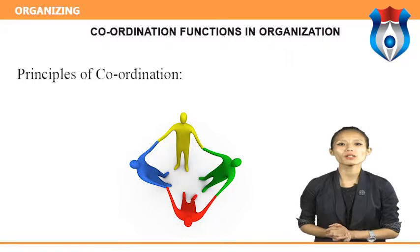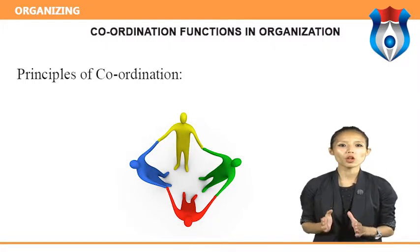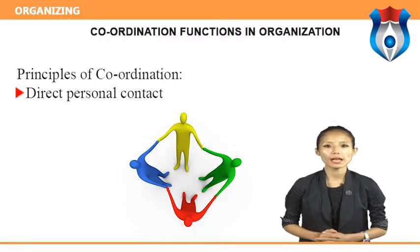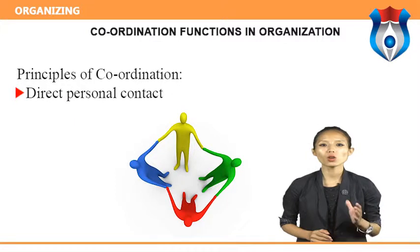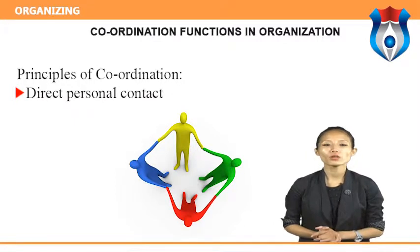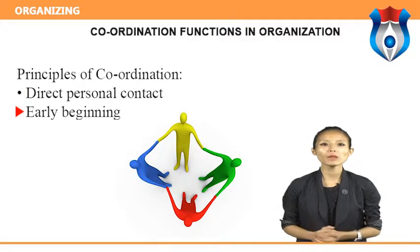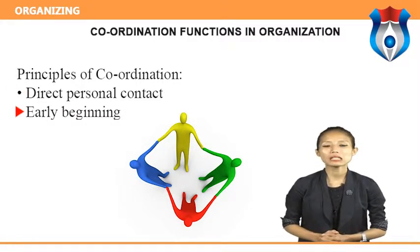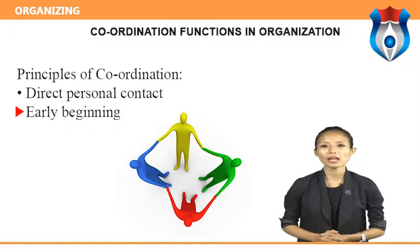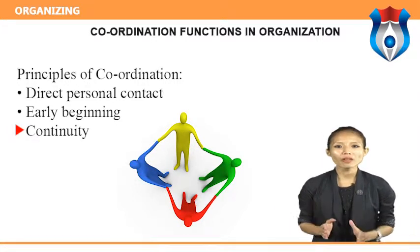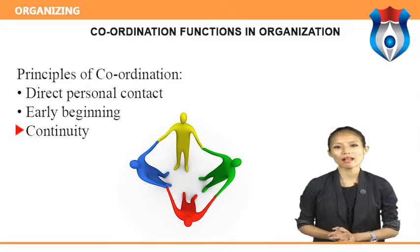Principles of coordination: Mary Parker Follett has laid out these principles for effective coordination. Direct personal contact — coordination is best achieved through direct personal contact with the people concerned. Early beginning — coordination can be achieved more easily in the early stages of planning and policy making. Continuity — coordination is an ongoing, never-ending process rather than a once-for-all activity.